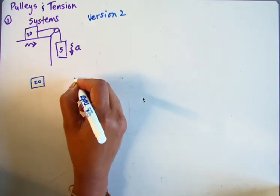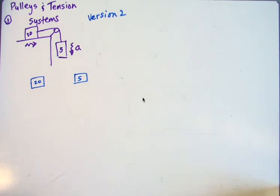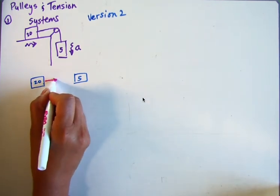You just take the two masses and you draw free body diagrams for them. So we've got the 20 kilogram mass. What are the forces acting on it? Well, there's no friction, so all we have is tension, Ft.